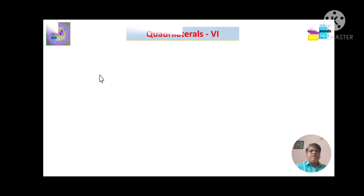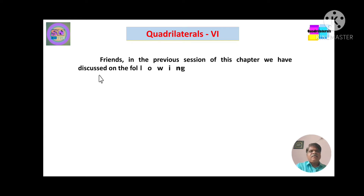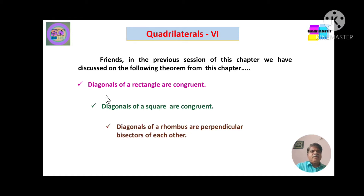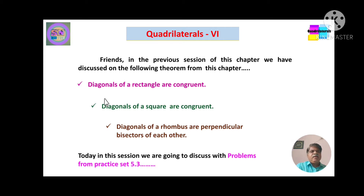Friends, in the previous session of Quadrilaterals Part 5, we discussed the following important subtopics: theorems from this chapter, including diagonals of a rectangle are congruent, diagonals of a square are congruent, and diagonals of a rhombus are perpendicular bisectors of each other. Today in this session, we are going to discuss problems based on those theorems — Practice Set 5.3.